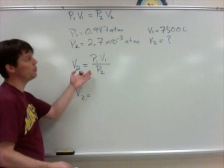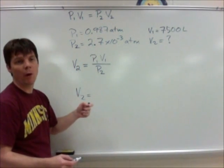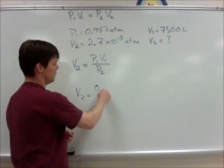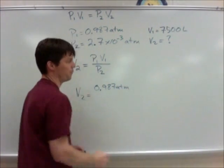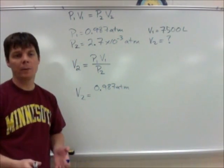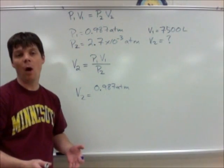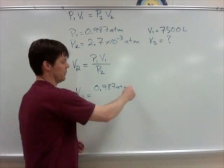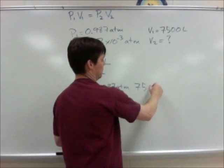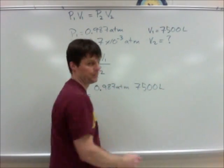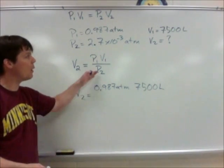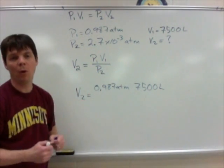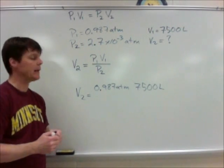V2 will be equal to P1, which was 0.987 atmospheres. And we're going to be multiplying this by V1, which was 7,500 liters. And finally, we're going to be dividing this by our P2, which was 2.7 times 10 to the minus 3 atmospheres.